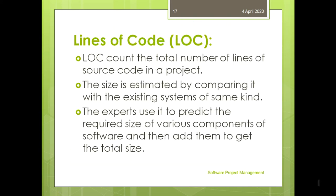Lines of code (LOC): as the name suggests, LOC counts the total number of lines of source code in a project. The size is estimated by comparing it with the existing system of the same kind. Experts use it to predict the required size of various components of software and then add them to get the total size. Advantages: it is universally accepted and used in many models like COCOMO; estimation is closer to the developer's perspective; and it is simple to use. Disadvantages: different programming languages contain different numbers of lines; no proper industry standard exists for this technique; and it is difficult to estimate the size using this technique in early stages of the project.